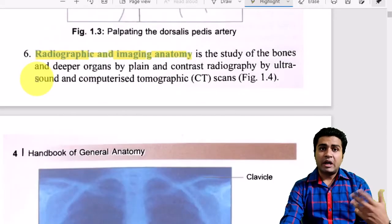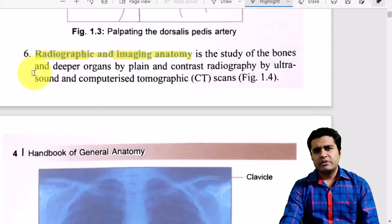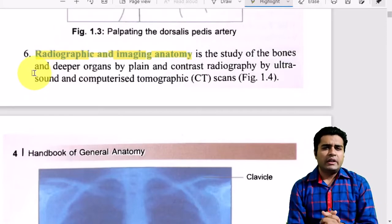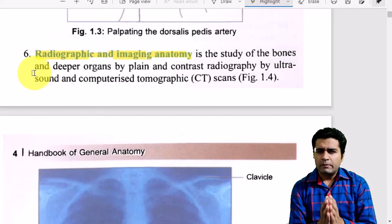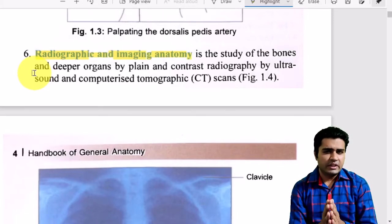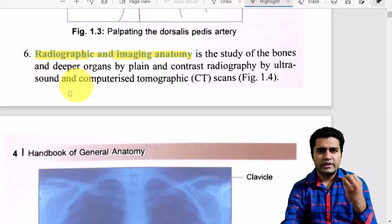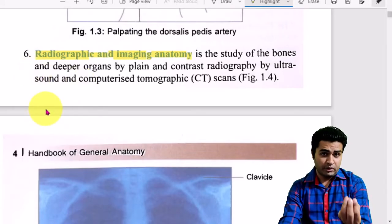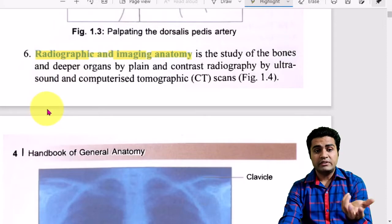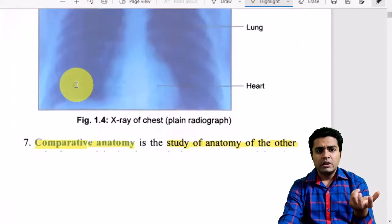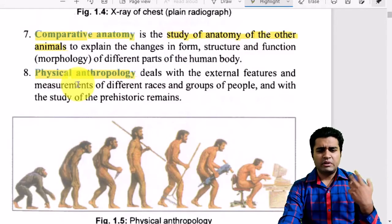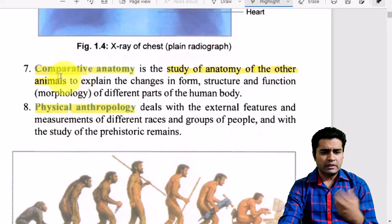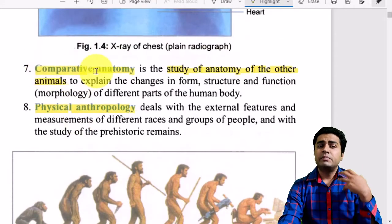Surface anatomy is very helpful in palpation as well. The sixth component is radiographic anatomy — a separate branch of radiology — in which we look at body structures using chest X-rays, CT scans, and MRI. This is also called imaging anatomy. Since the invention of CT and MRI, radiological anatomy has made enormous strides.